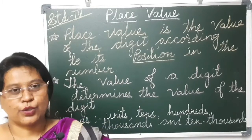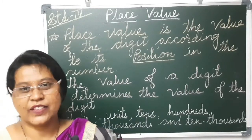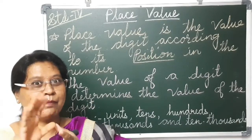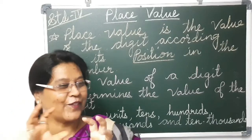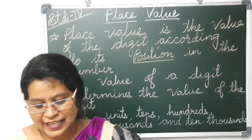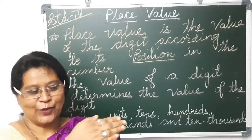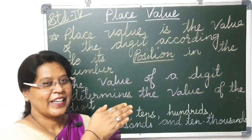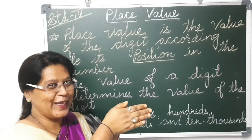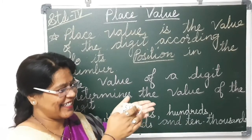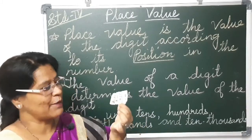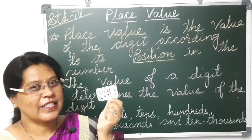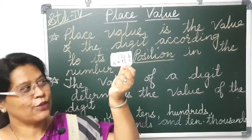I wanted to show you one magic here. With one magical thing I wanted to explain you the place value as well as the expanded form of the numbers. There is a magic in my hand. Now just spell the magical words — Gilly gilly shoe, open! So here these are magical paper pieces in my hand. You can see. Can you see here?